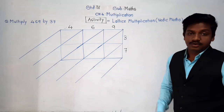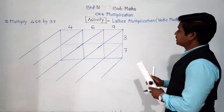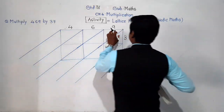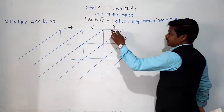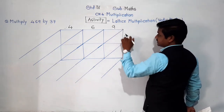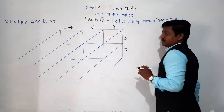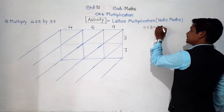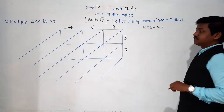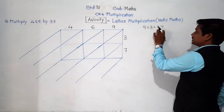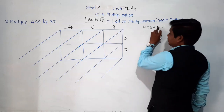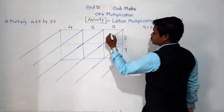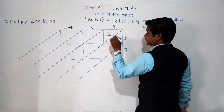Now start multiplying from the rightmost side. Here there is 9 and 3, so 9 × 3 = 27. In this box we write 27: the tens digit 2 goes in the upper triangle and the units digit 7 goes in the lower triangle. Each box is split diagonally into two parts — tens above, units below.